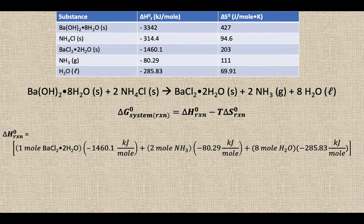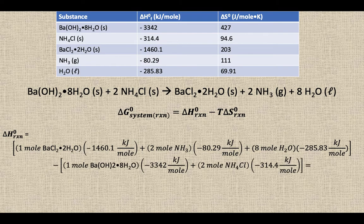We take those products and subtract out our reactants, the barium hydroxide octahydrate, and the two moles worth of ammonium chloride. That piece of the puzzle tells us that the delta H of reaction is positive 63.48.